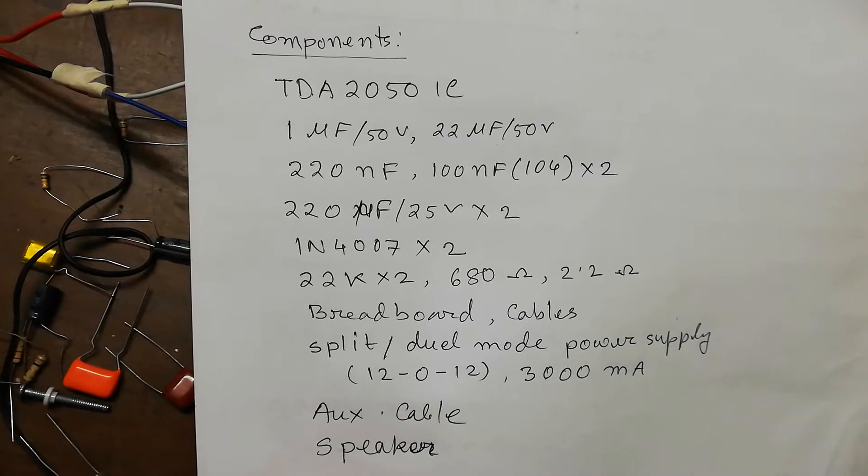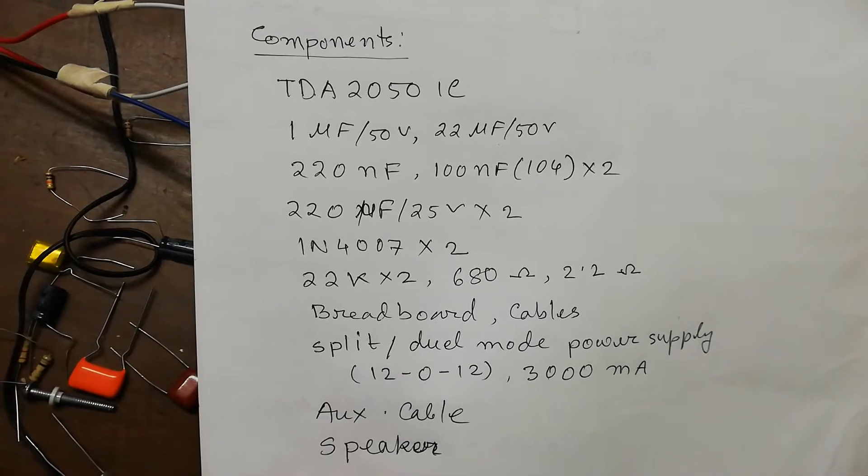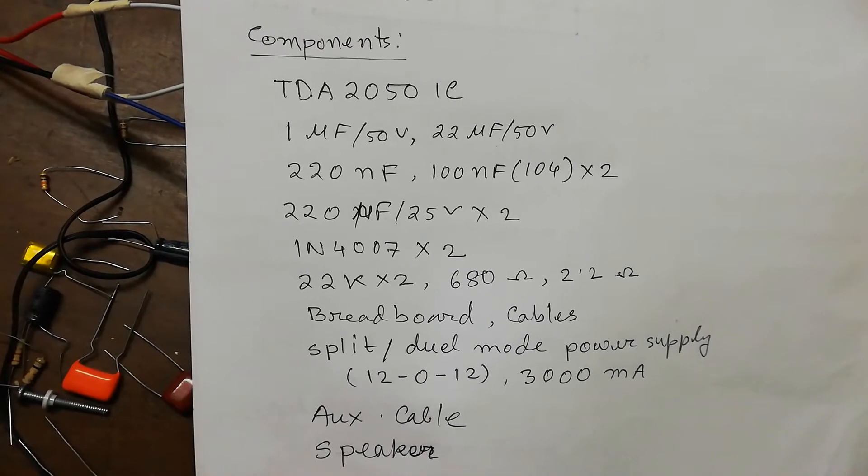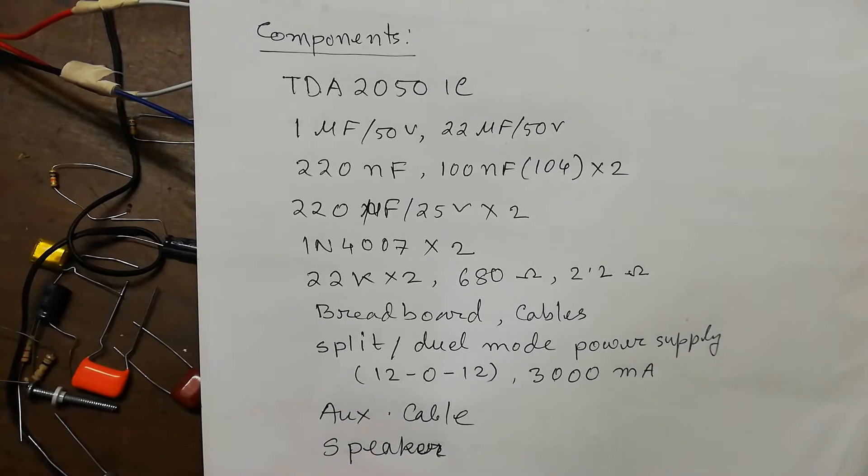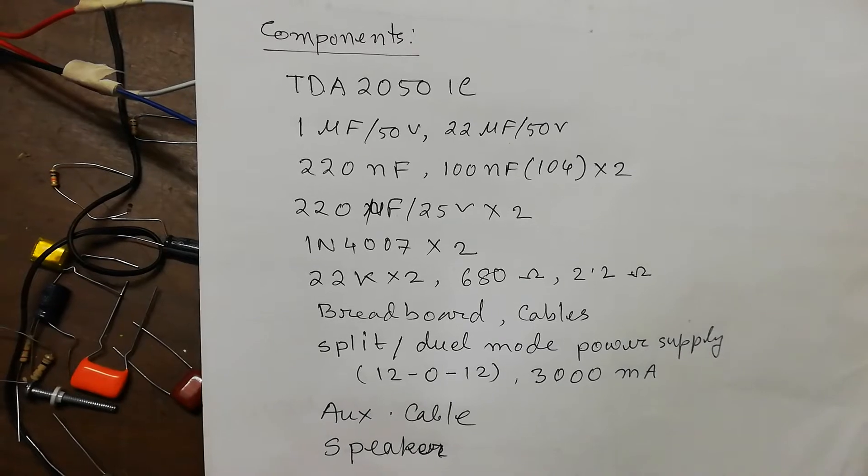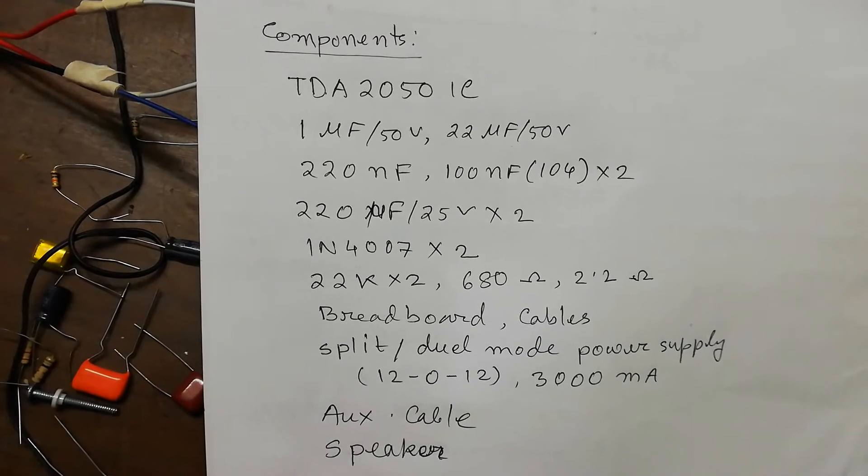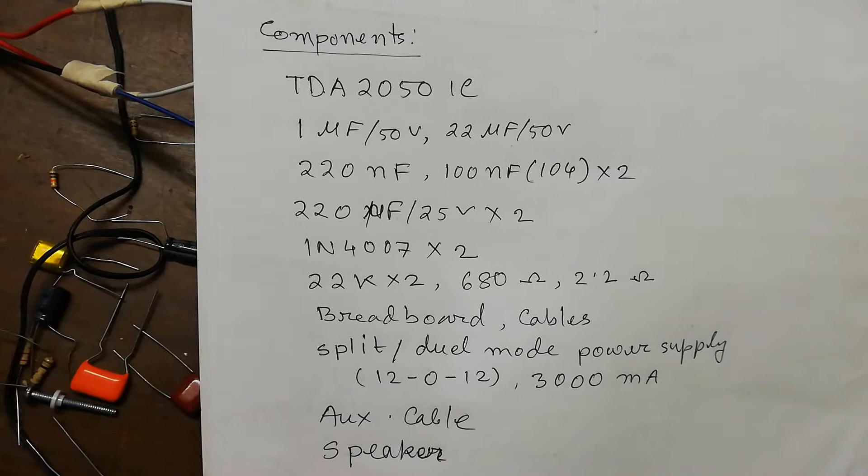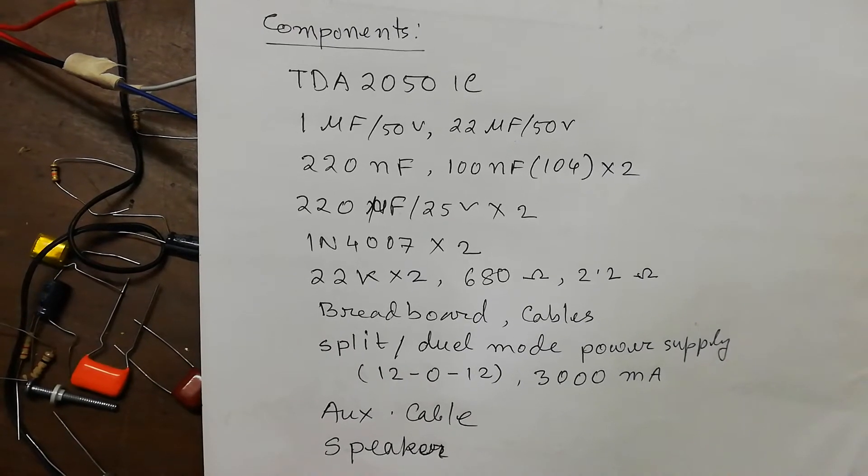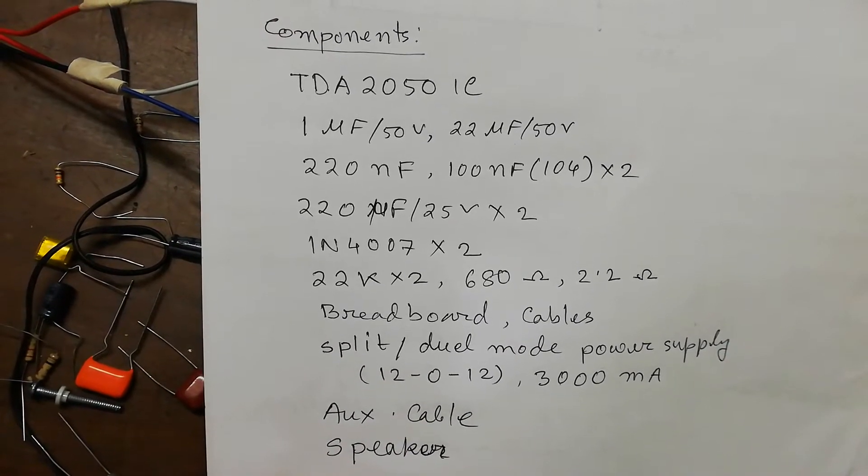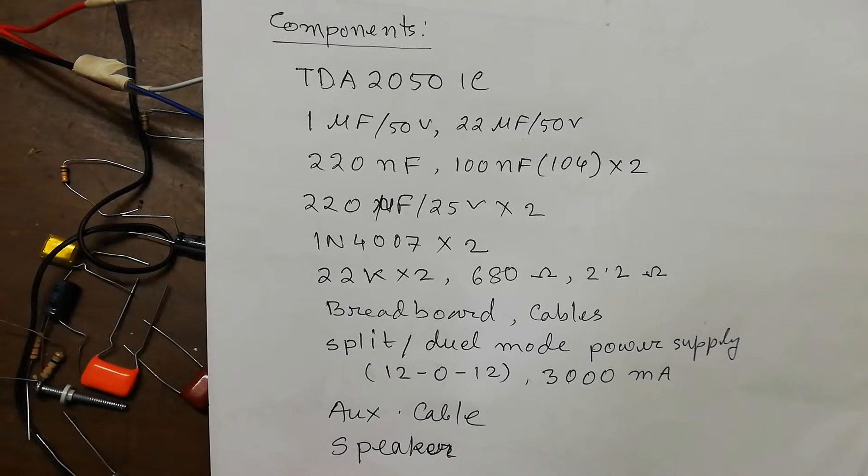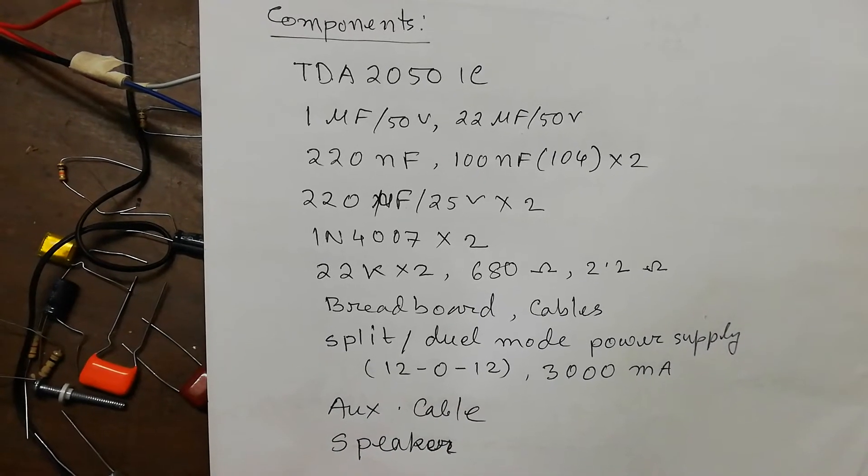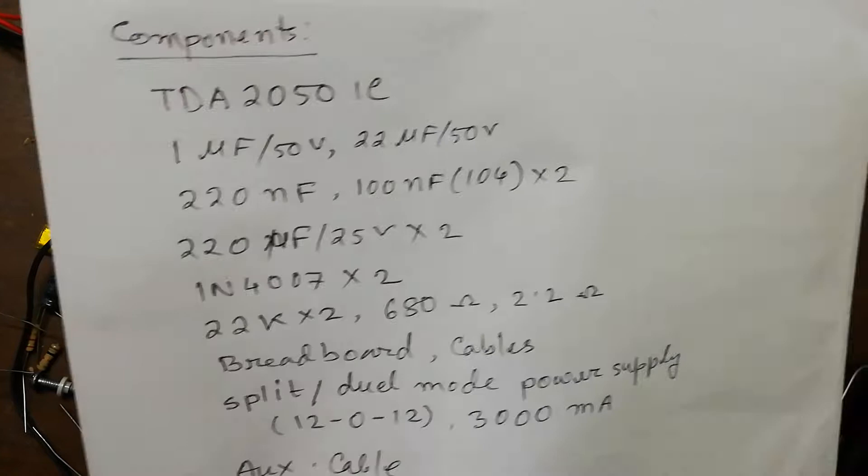And then 220 microfarad 25 volt, two capacitors, and two diodes, 1N4007. And then we will require some resistors like 22k two pieces and 680 ohm one piece resistor and 2.2 ohm 1 watt resistor. I also used one breadboard, some cables, and very important thing is the dual mode power supply or split power supply. Here I used 12-0-12, 3000 milliampere, that means three ampere transformer.